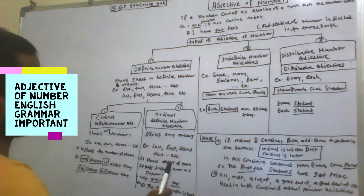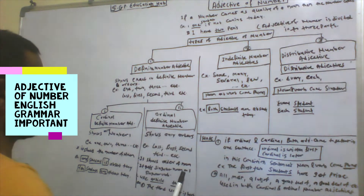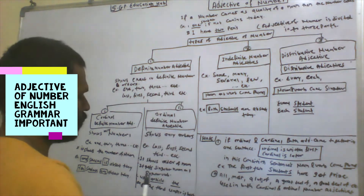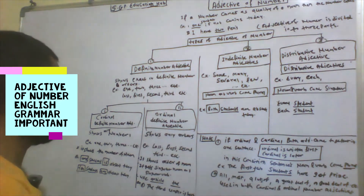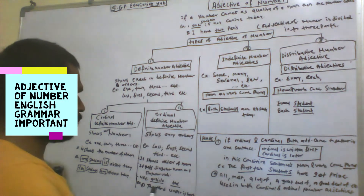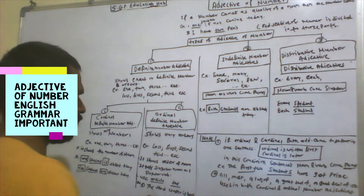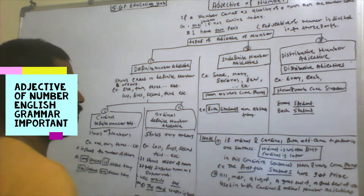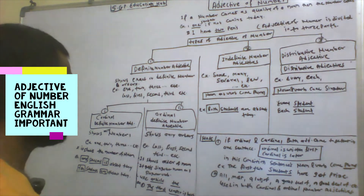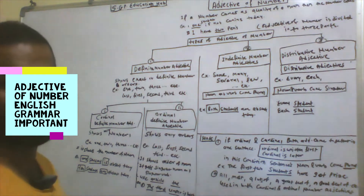With ordinal definite number adjective, we use a singular number and singular verb, and we use the article 'the'. For example: 'The third empire.' Here, 'the' is the article used. 'Third' is the ordinal definite number adjective. 'Empire' is the noun, which is singular. And 'is' is the verb, which is also singular.